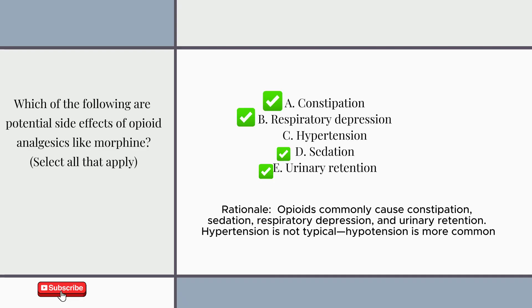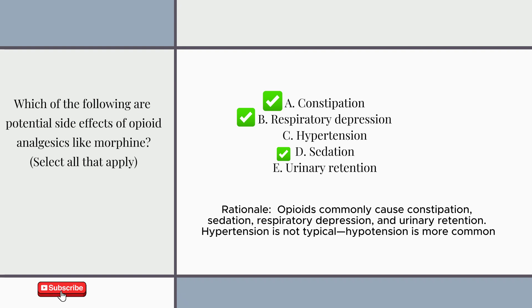Answer: A, B, D, E. Opioids commonly cause constipation, sedation, respiratory depression, and urinary retention. Hypertension is not typical — hypotension is more common.